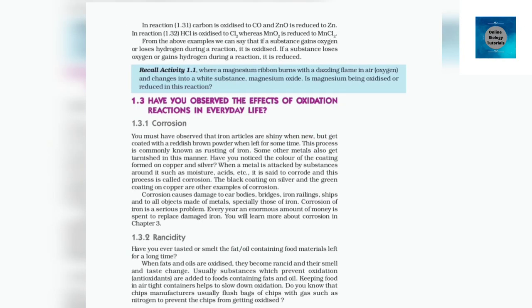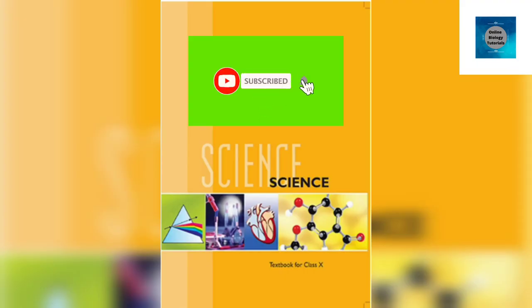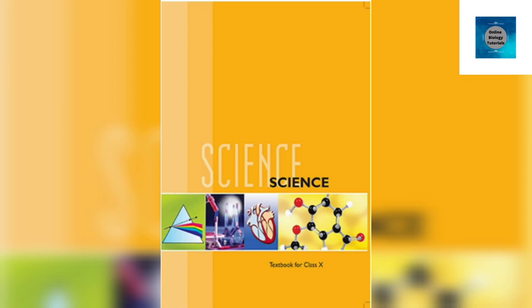Rancidity: have you ever tasted or smelt fat/oil-containing food materials left for a long time? When fats and oils are oxidized, they become rancid and their smell and taste change. Usually substances which prevent oxidation are added to foods containing fats and oil. Keeping food in airtight containers helps to slow down oxidation. Chips manufacturers usually flush bags of chips with gas such as nitrogen to prevent the chips from getting oxidized. And that's the end of the chapter Chemical Reactions and Equations. Hope it was worth listening. If you have not subscribed to my channel yet, please do so and share with your friends so that each one can relax their eyes. Stay connected for the next chapter. Thank you.